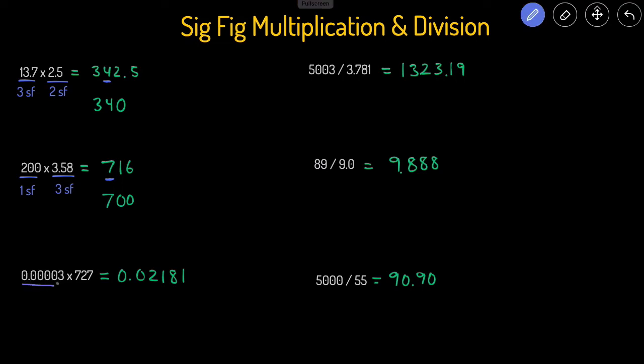Next one. This number just has one significant figure. Starting zeros, leading zeros, they will never count regardless if we have a decimal point or not. So we only have one sig fig here and we have three sig figs here.